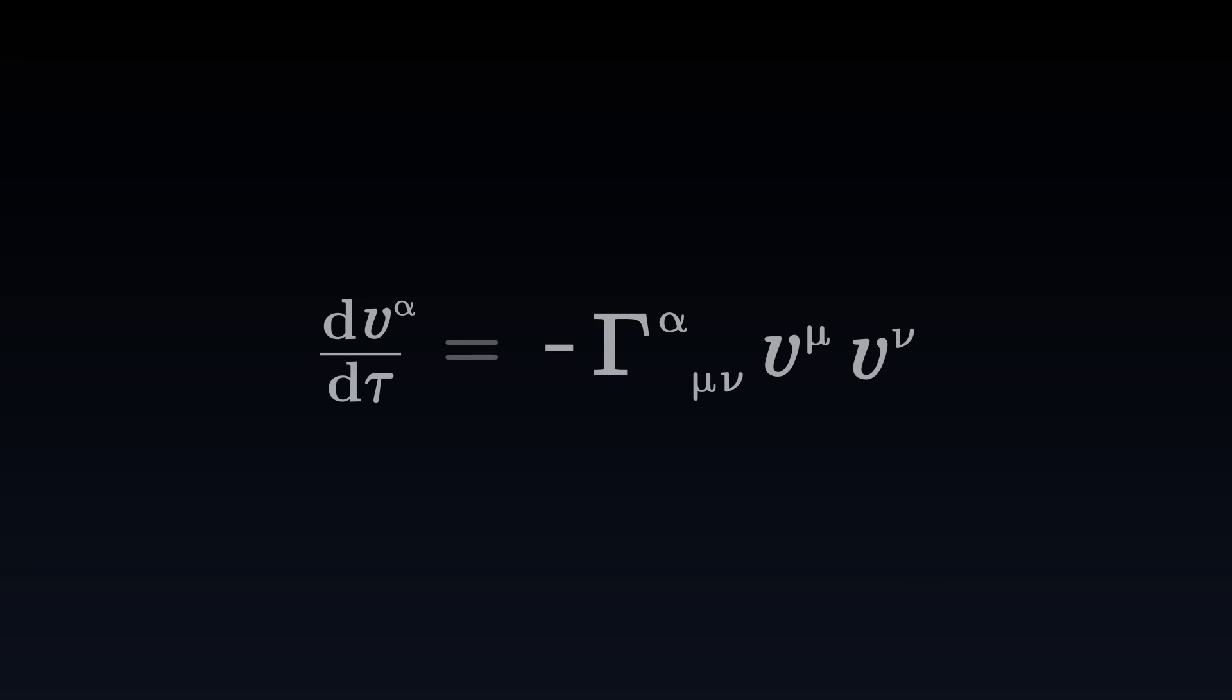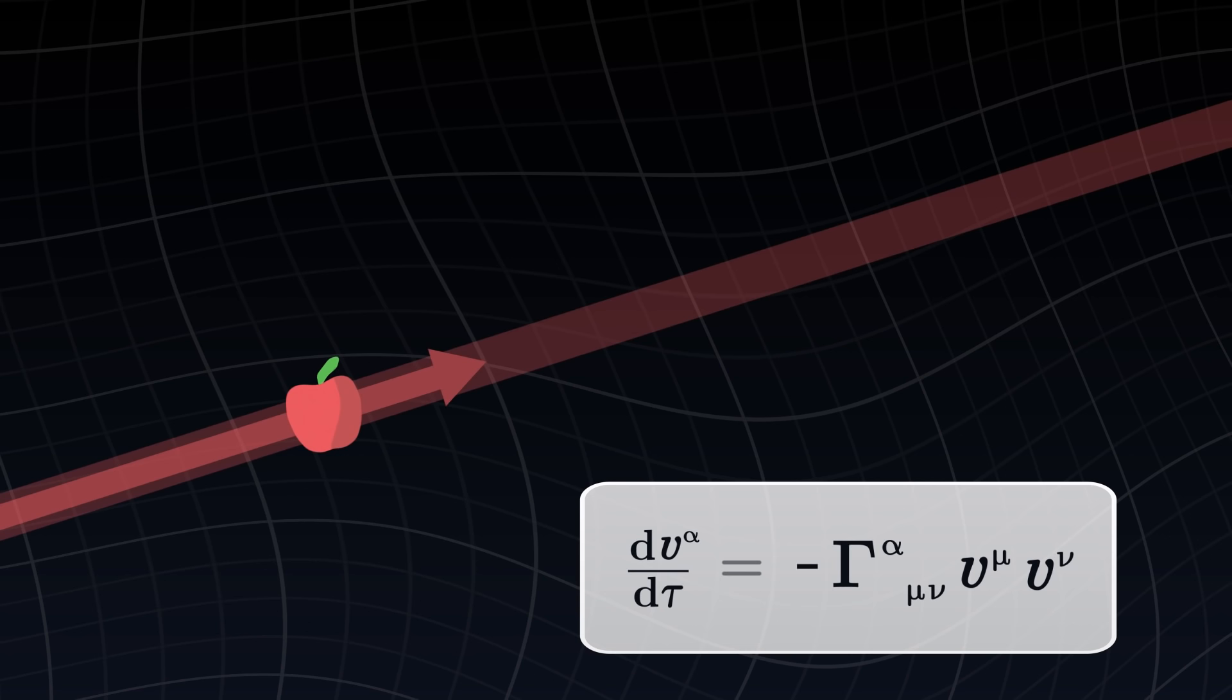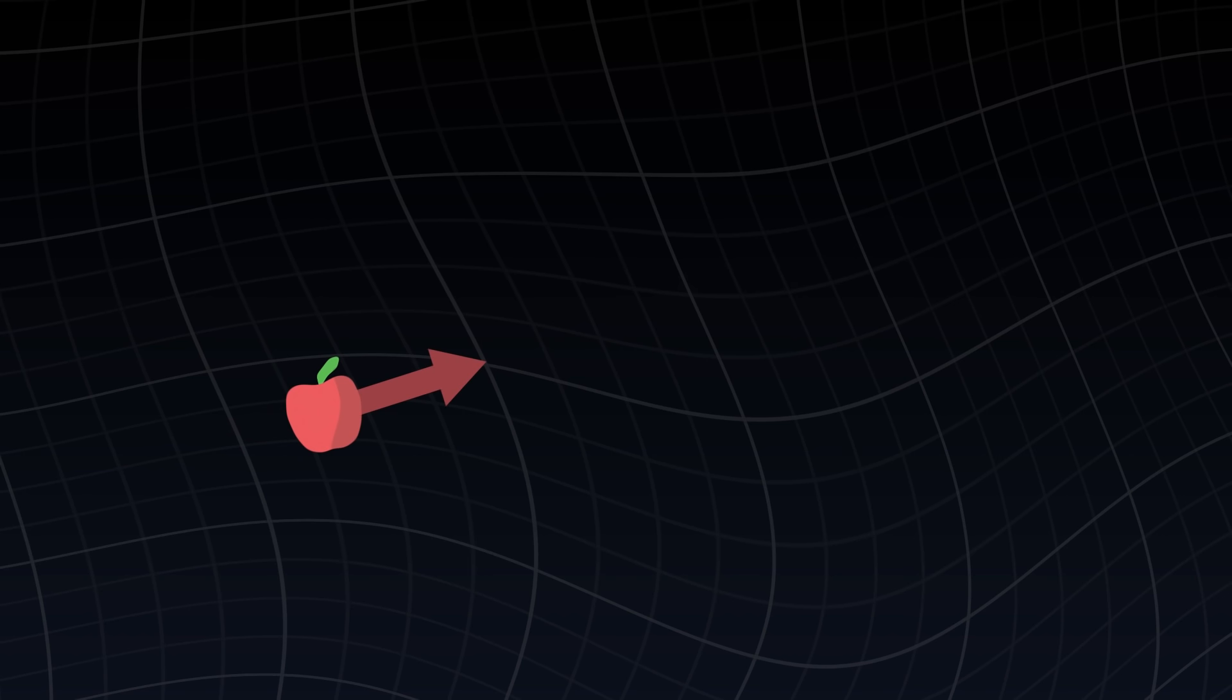Finally, let's remember the geodesic equation. We saw previously that this equation predicts the trajectory of an object, provided that we know the Christoffel symbols. But so far, nothing told us the value of these symbols, and the equation was therefore impossible to use.